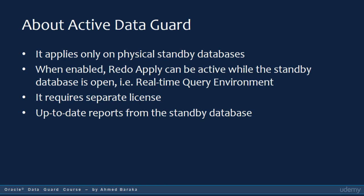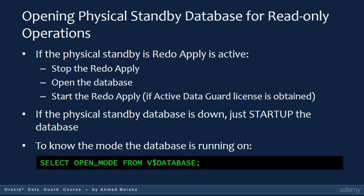Unfortunately, to enable this feature you must purchase a separate license. Without the Active Data Guard license, if you want to allow access to the physical standby database for read-only operations, you must stop the redo apply first. The advantage of using Active Data Guard is obvious — you will receive up-to-date data in the standby database. If you want to open a physical standby database for read-only operations, you must stop the redo apply if it was running, then open the database.